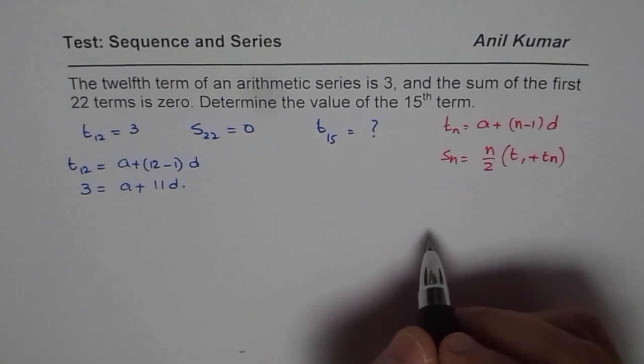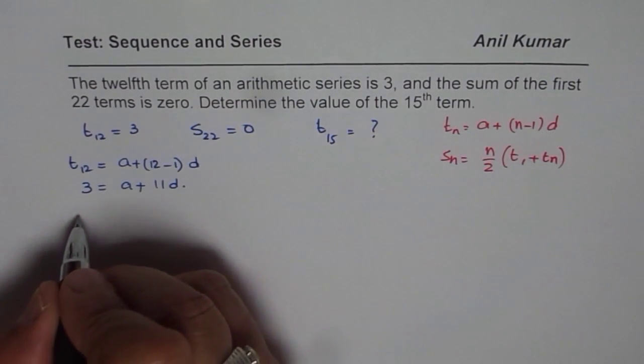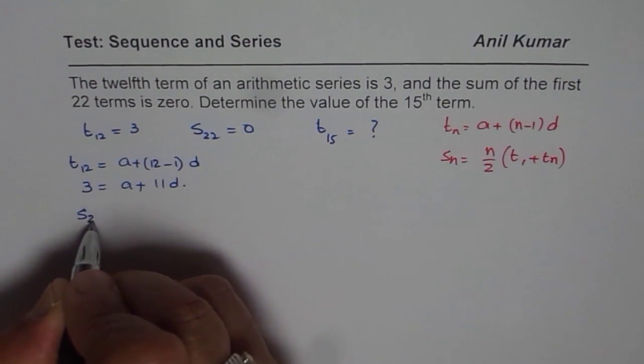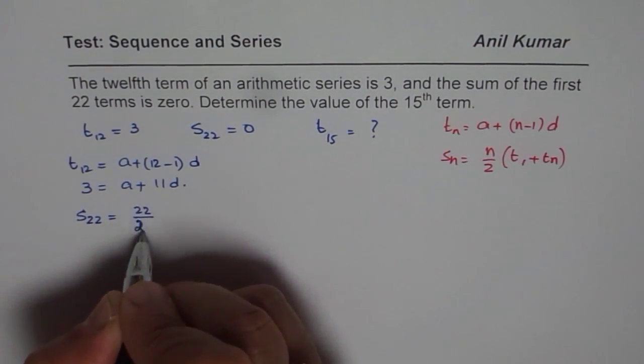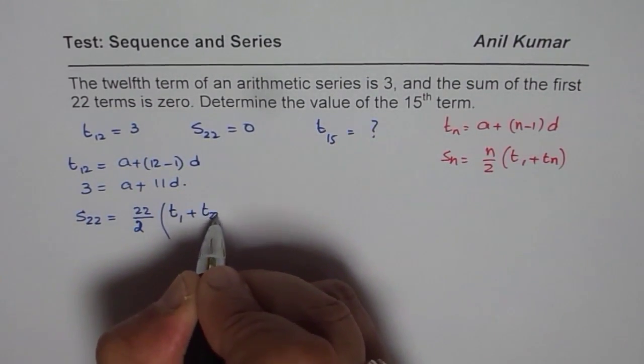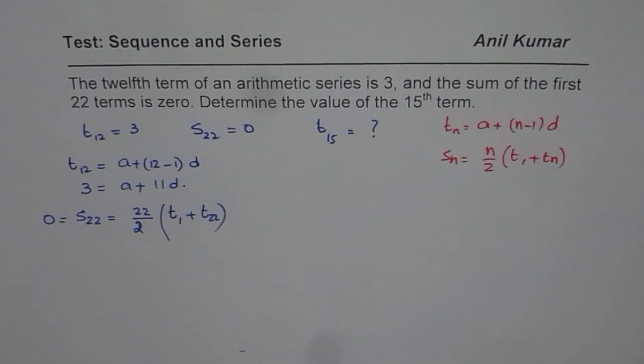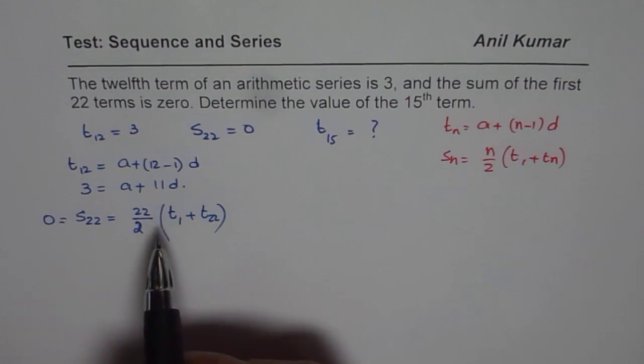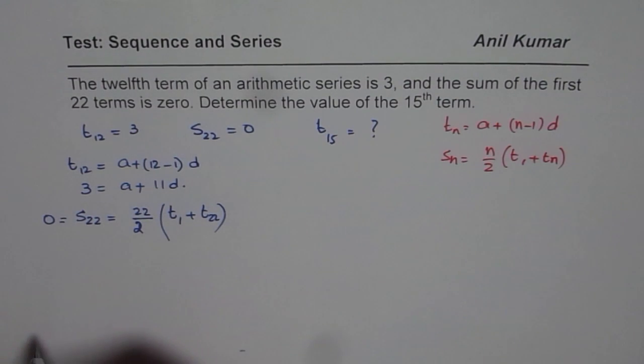Now when can I get sum S0? So what we are saying here is that S22 equals 22 over 2, which is 11, times T1 plus T22. Now if I say that this sum is 0, what does it mean? That is the key for solving this particular question. And that is the reason why some of you could not get it. This could be 0 only if T1 plus T22 is 0. Otherwise it cannot be 0.